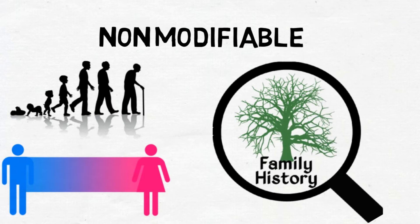After menopause, the risk for men and women are similar. Family history is also a non-modifiable risk factor — you have a higher risk of developing heart disease if you have a close blood relative who has had coronary heart disease, especially under the age of 55 for a male relative or 65 for a female relative.